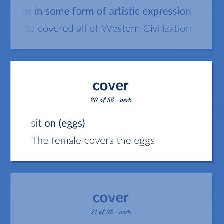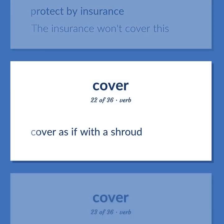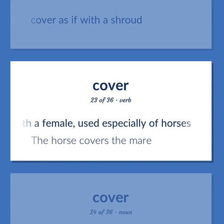Sit on eggs — the female covers the eggs. Protect by insurance — the insurance won't cover this. Cover as if with a shroud. Copulate with a female, used especially of horses — the horse covers the mare.